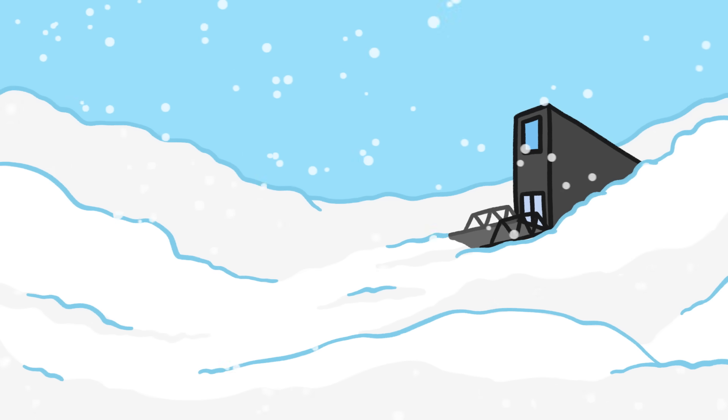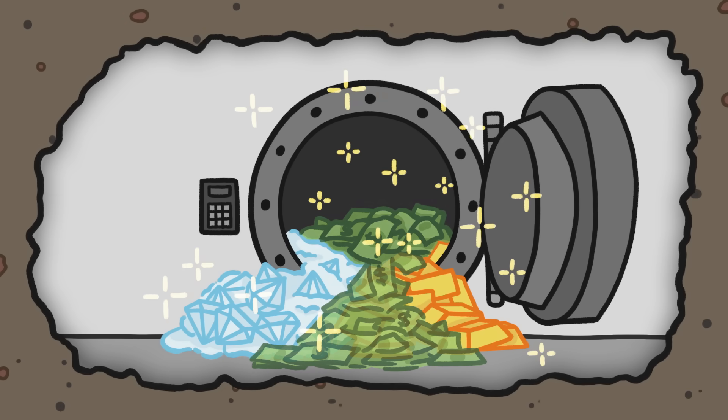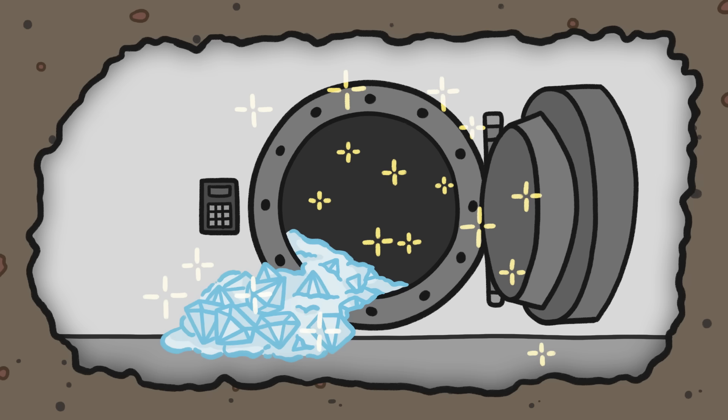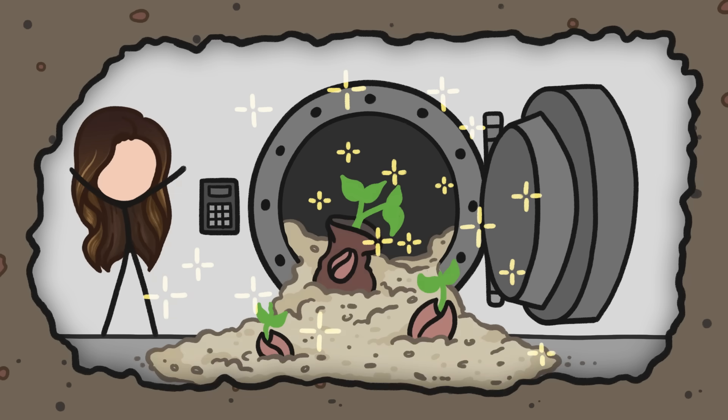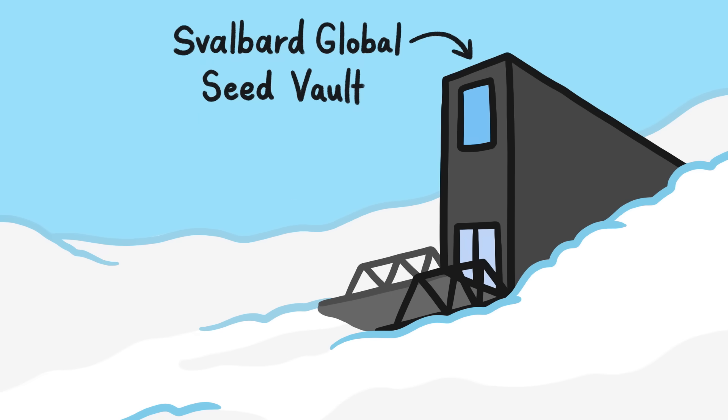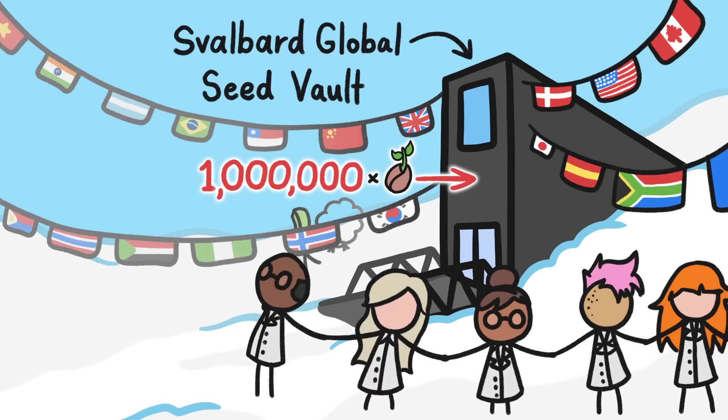Up in the Arctic Circle, buried in 400 feet of permafrost, lies a vault, a very special vault. It's not filled with money, or gold, or diamonds. This vault holds the world's largest collection of seeds. The Svalbard Global Seed Vault is home to almost one million seeds from nearly every country in the world. Scientists take great care in protecting these seeds, as they protect the health of our planet. Think about it.